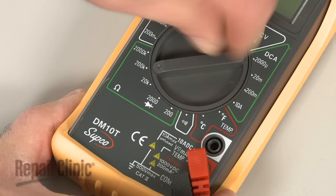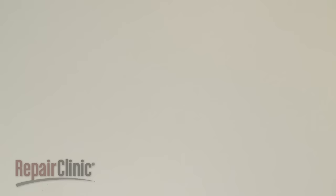When using a digital model, again rotate the dial to the lowest setting for ohms of resistance, or resistance with tone if your meter has this option.